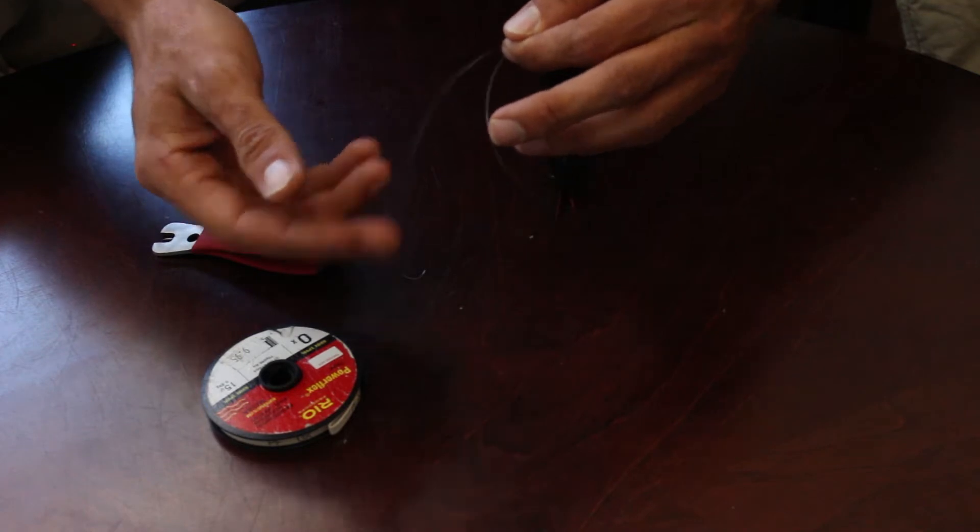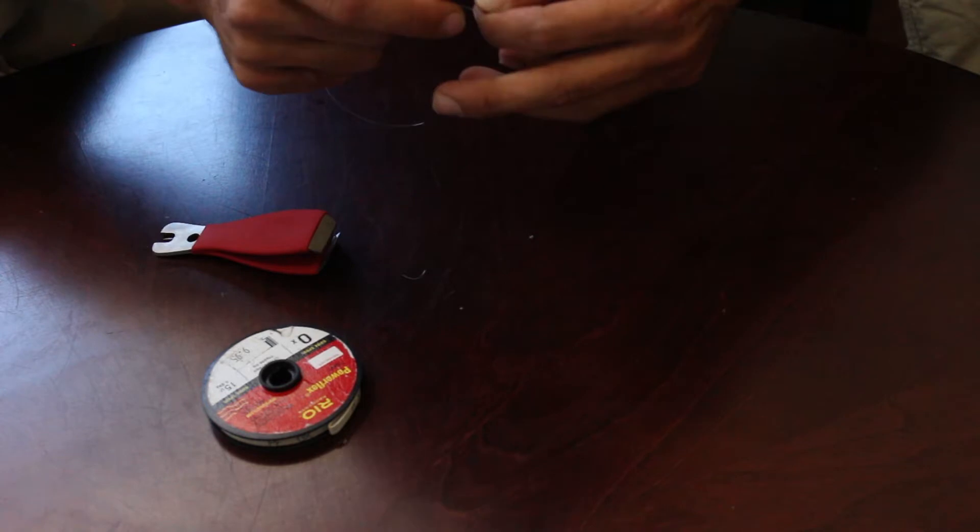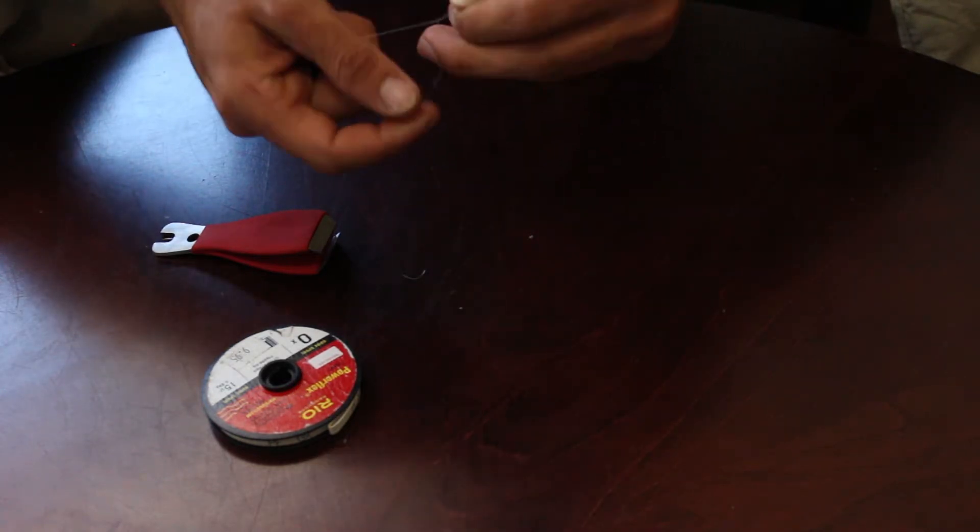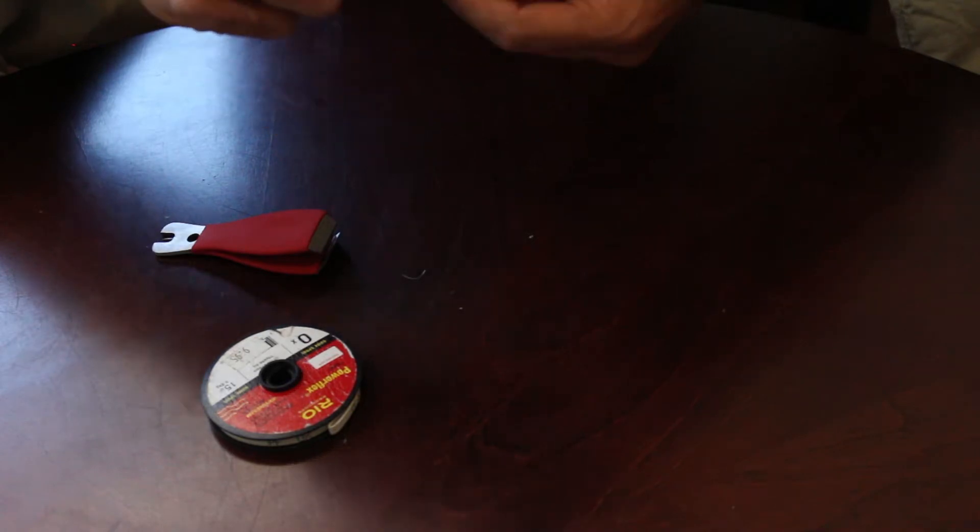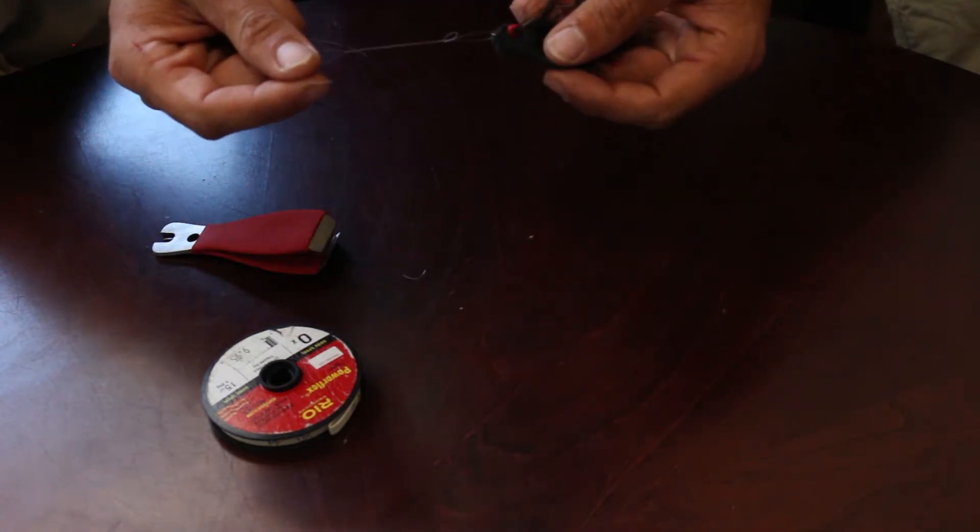Now take your tag end and start wrapping that above where you're holding. I'm going to do six, seven wraps—whatever grandpa taught you. I've never noticed a big difference between six or seven wraps, I'll be honest. I try to do seven because that's what my grandpa taught me. After those seven wraps...